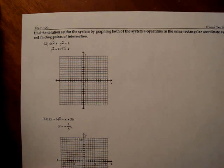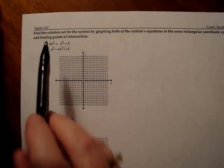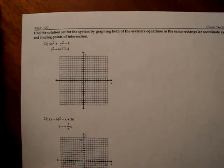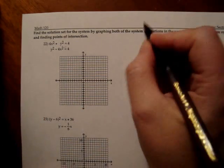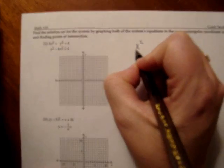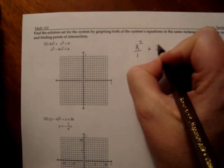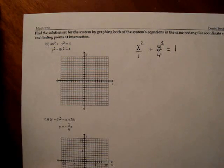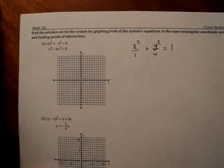So the first thing I need to do is write it in standard form, and I know standard form of an ellipse has a 1 over here on the left, so I'm going to divide everything through by 4. And when I simplify that, I will get x squared over 1. I leave the 1 there so I remember to count, plus y squared over 4 is equal to 1.